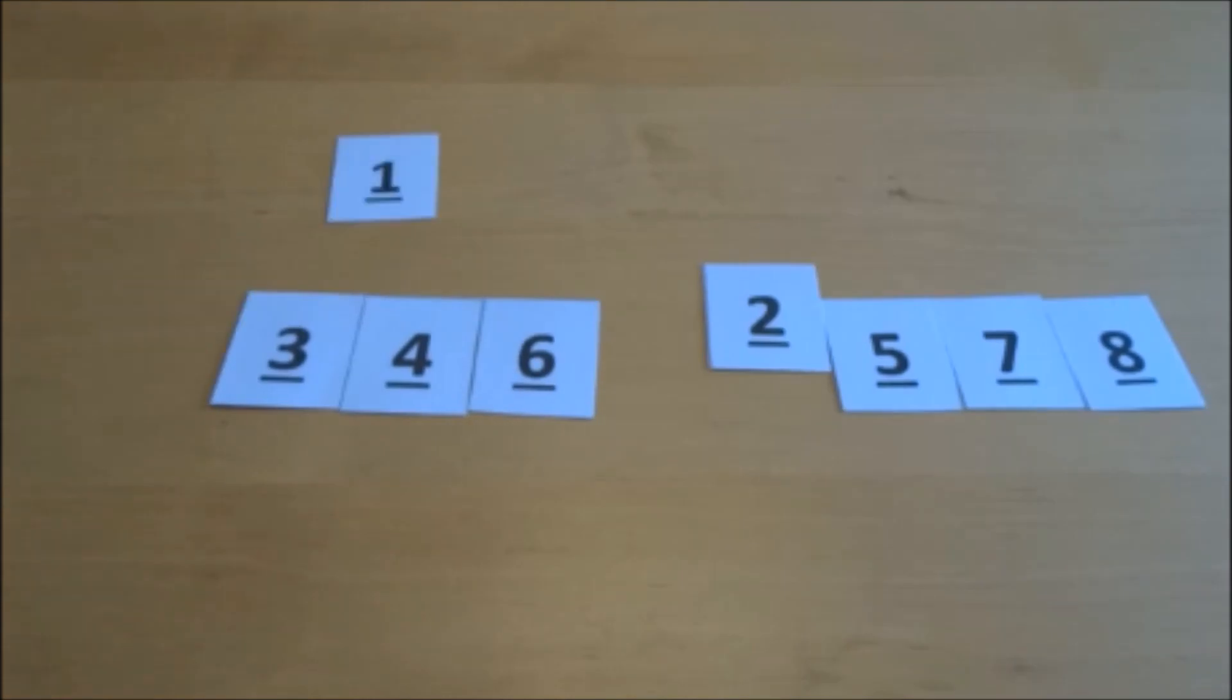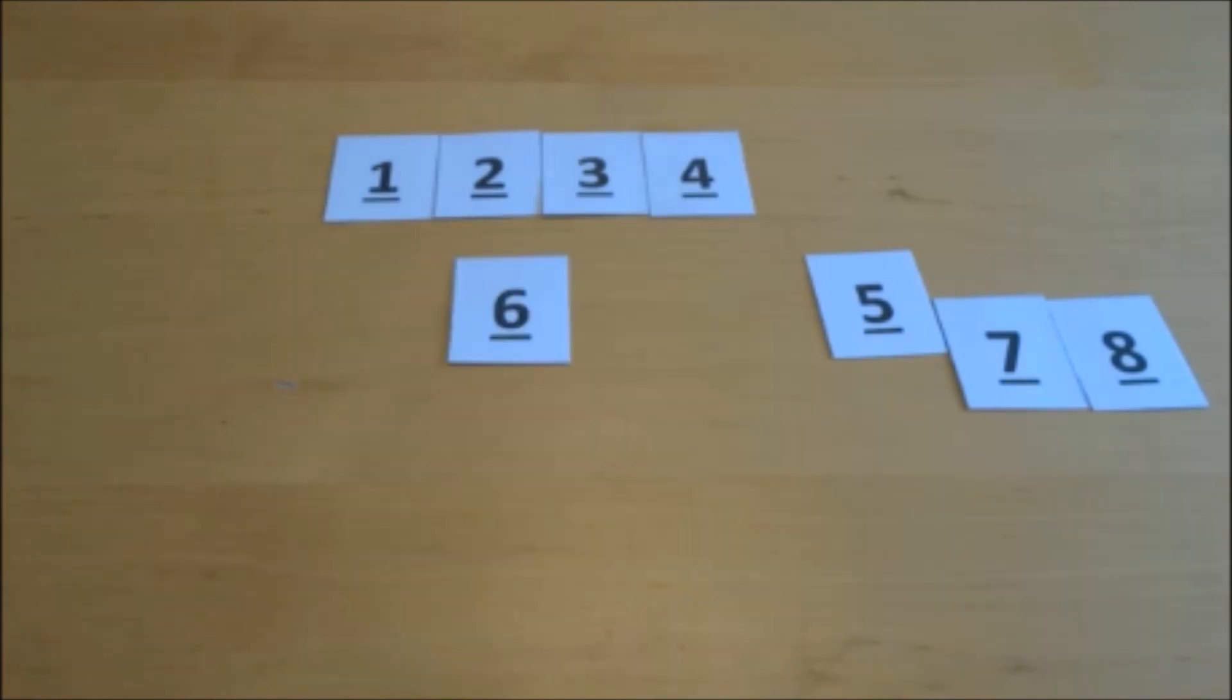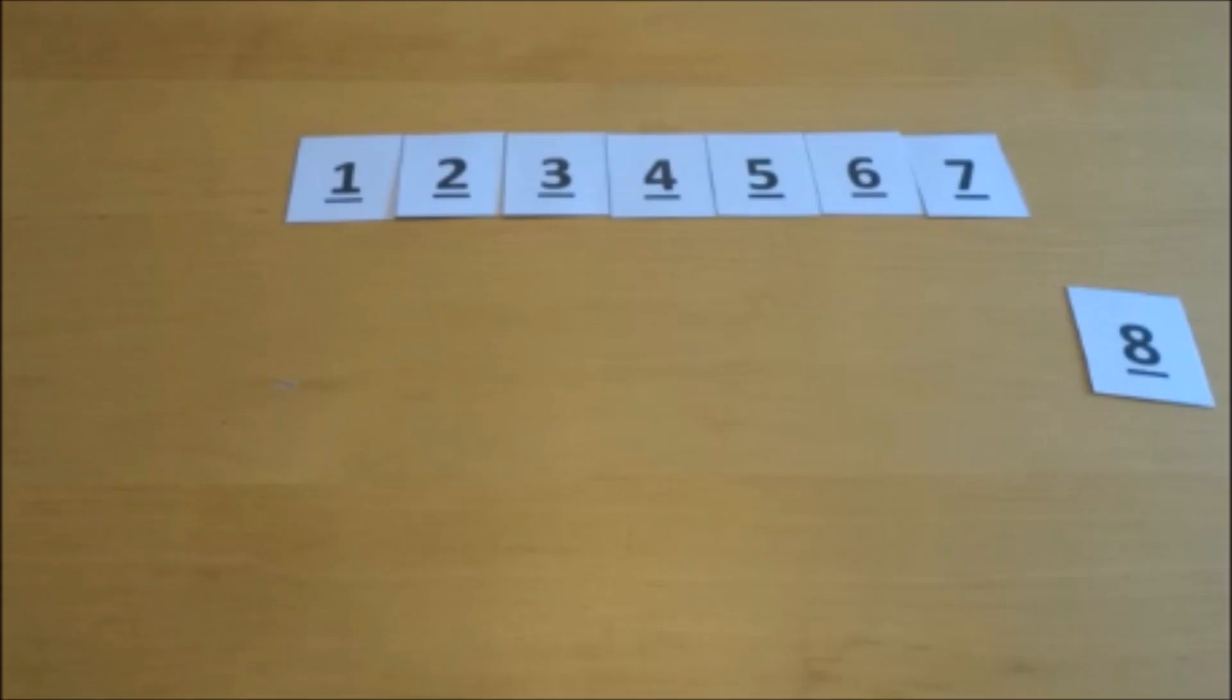So compare the first number in each half and put the smaller one into another array. Repeat this until all the numbers are sorted. And here you have the final sorted array using the merge sort.